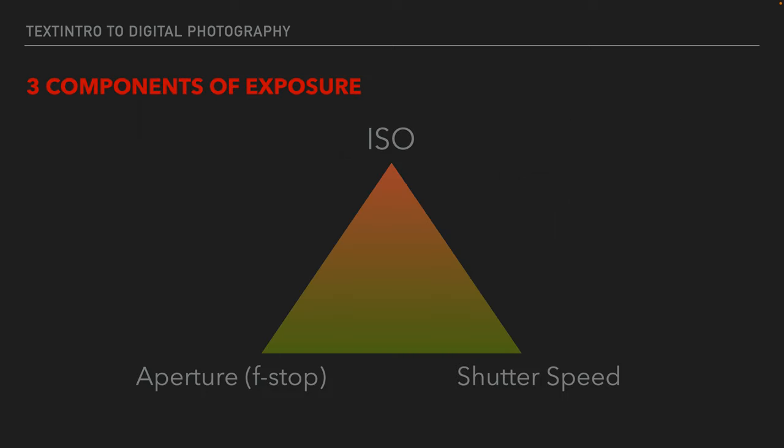What are the components we use to make this exposure happen? We talked about them a little bit when we went over the camera: we have an ISO, we have an aperture, and we have a shutter speed. These three things balance out to create our exposure.